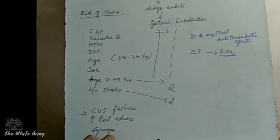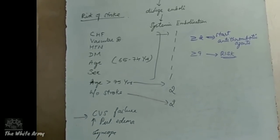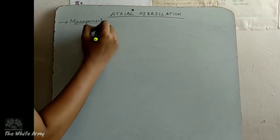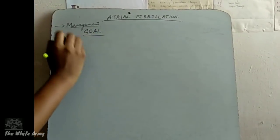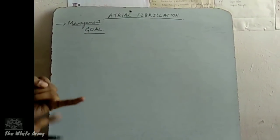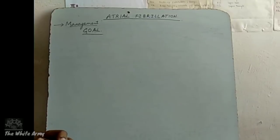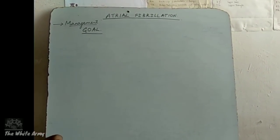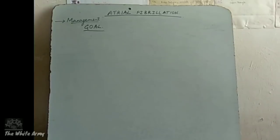Now let's discuss the management. The main goals in managing atrial fibrillation are: firstly, achieve hemodynamic stabilization; then control the ventricular rate; restoration of sinus rhythm; prevent the complications; and lastly, treat the cause.